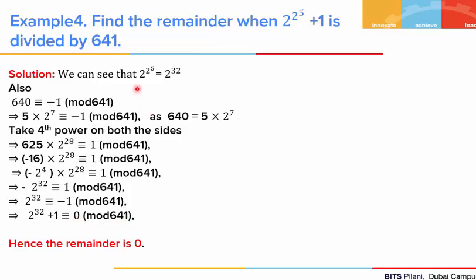This is nothing but a Fermat number. Fermat numbers are of the form 2 to the power 2 to the power n, plus 1. When we take n equal to 5, it is not a prime number — it gives us that this whole term is a composite number, and 641 is one of its factors.